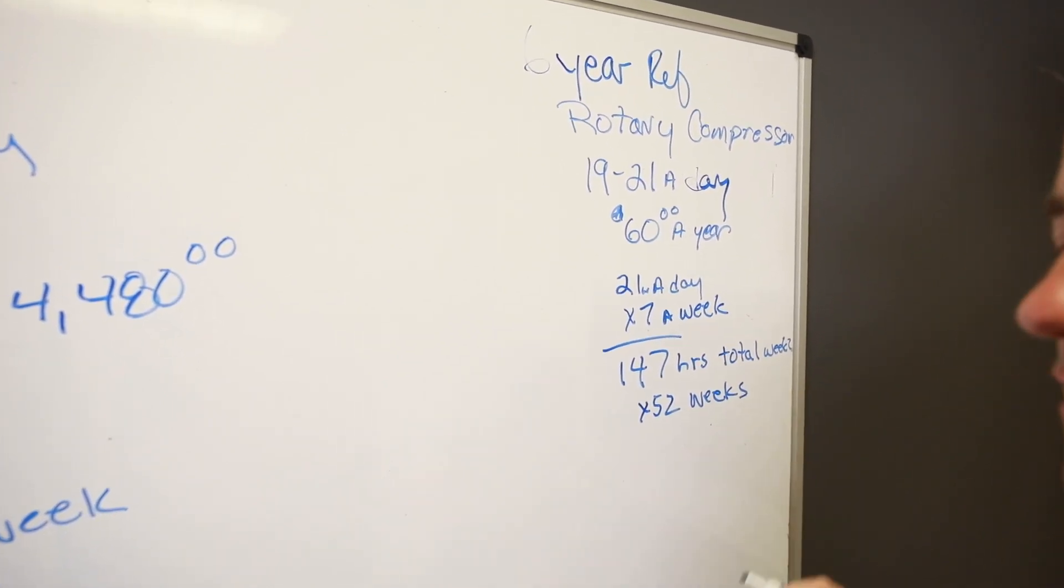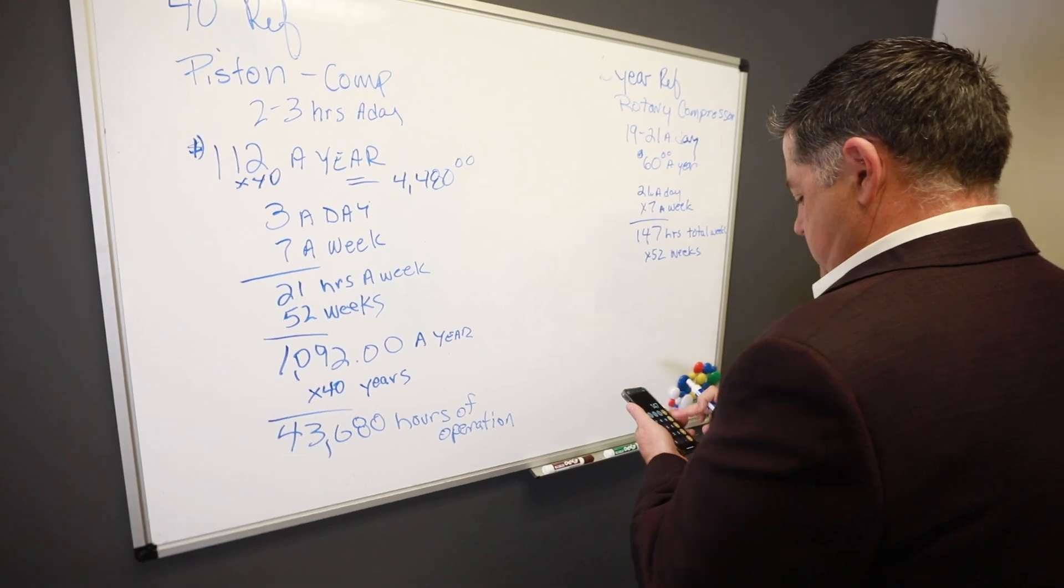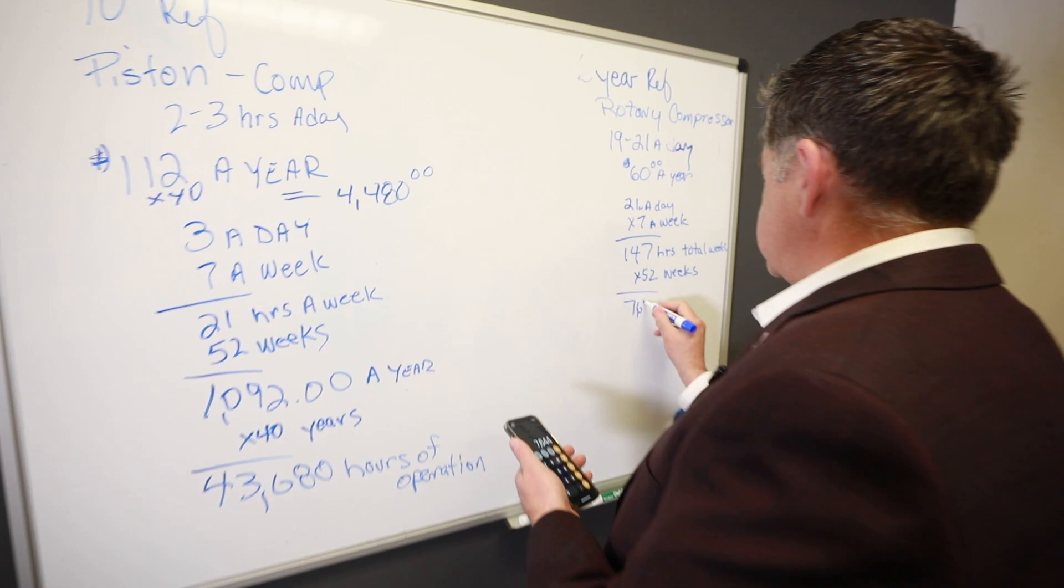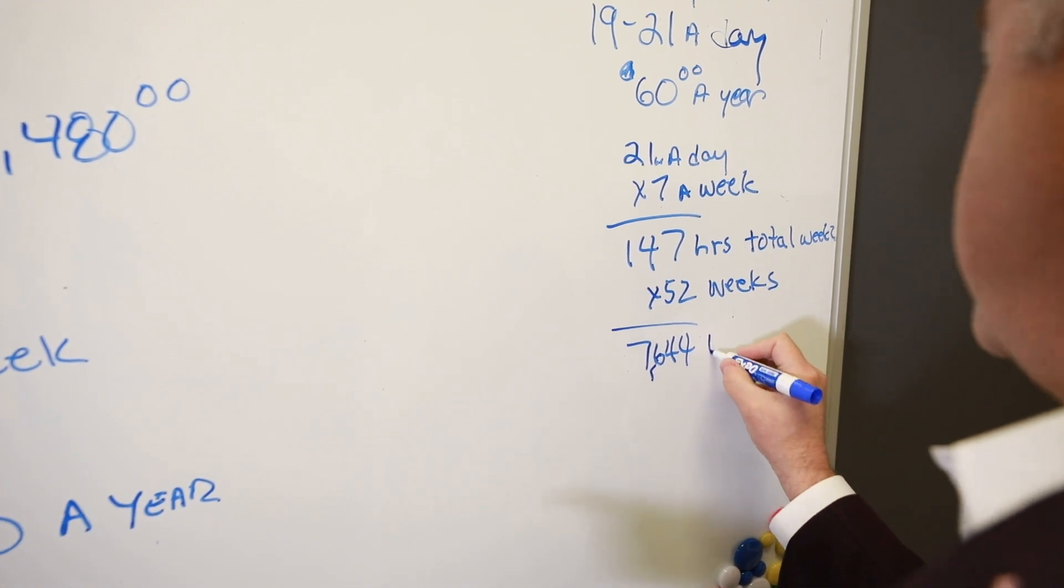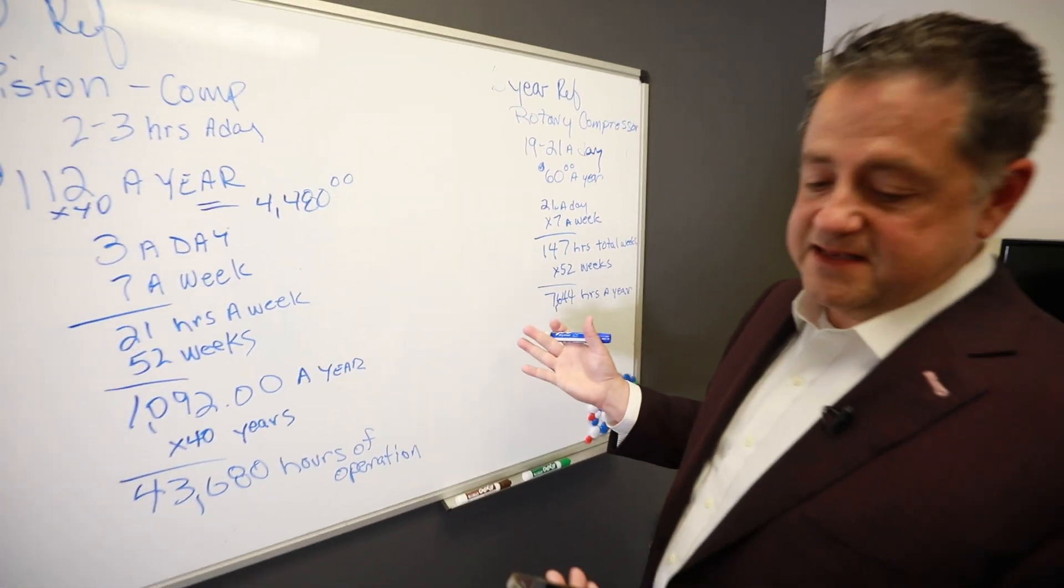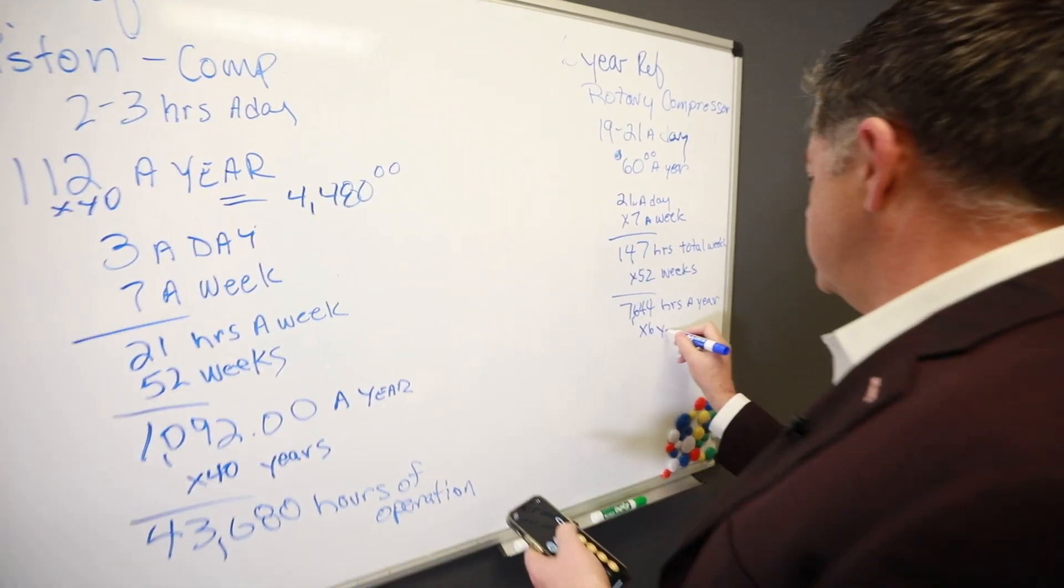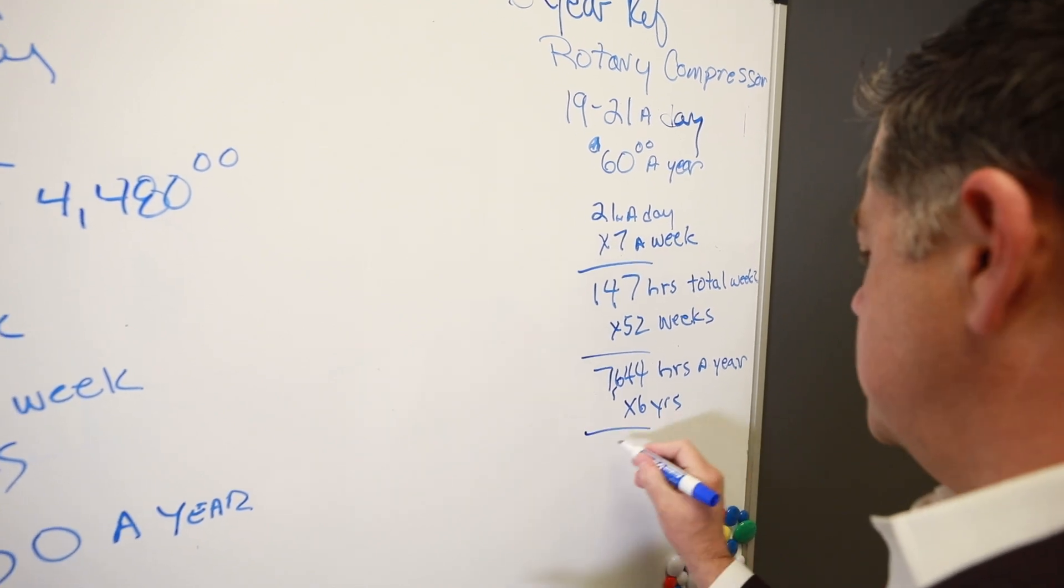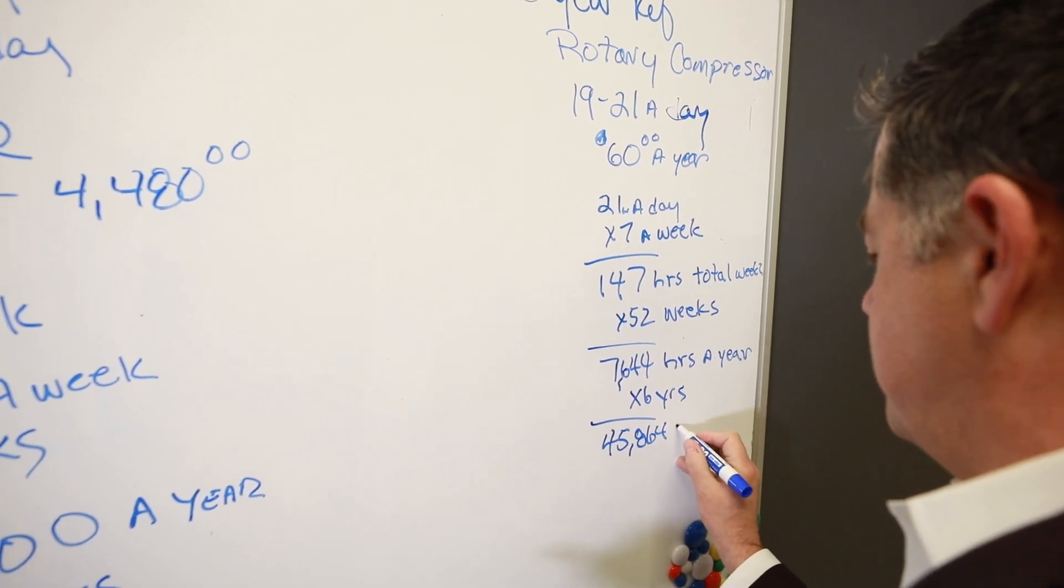And I'm going to have to pull the calculator out on this one. So 147 times 52, that's going to be 7,644 hours a year. And then we're upset, this only lasted six years, we'll multiply that by six. So this actually operated in that six years, 45,864 hours.